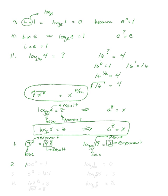Let's do 100 to the 0 power — anything to the 0 power is 1. Transform that over: write down log, the base is 100 as a subscript, the result 1 goes on the same line as the log, and the exponent 0 goes on the other side of the equals sign.